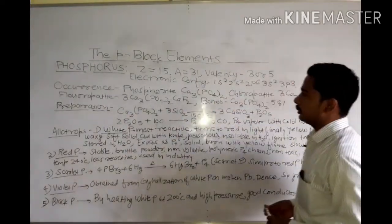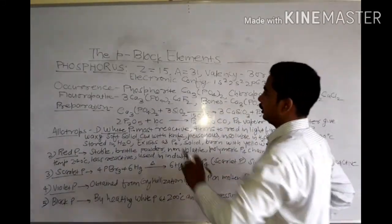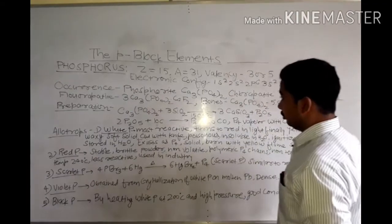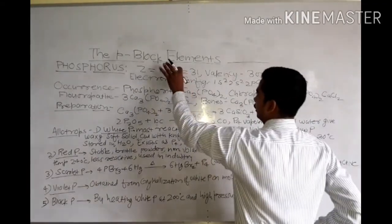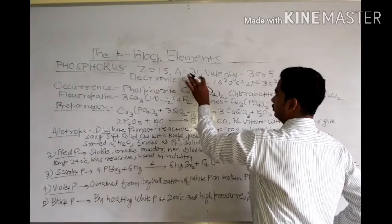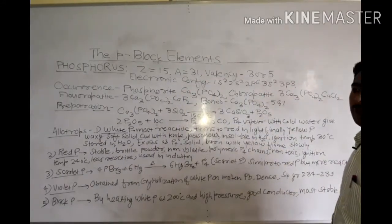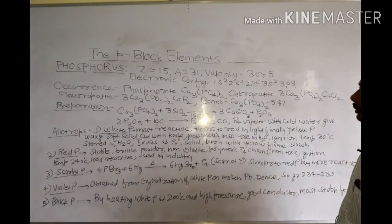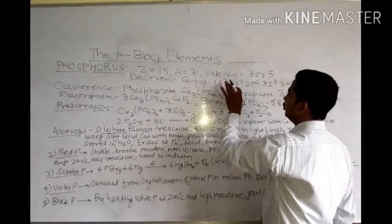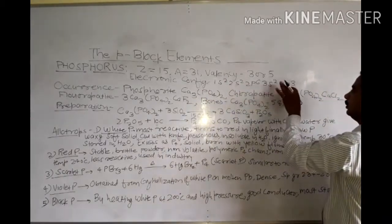Phosphorus general information: atomic number 15, mass number 31, valency 3 or 5, electronic configuration 1s2, 2s2, 2p6, 3s2, 3p3.